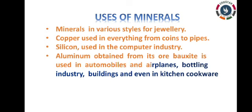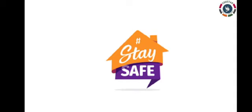Copper is used in making coins and pipes. Silicon is used in the computer industry to make chips. Aluminium, extracted from the ore of bauxite, is used in the automobile industry, airplane manufacturing, bottling industry, construction of buildings, and kitchen cookware. This brings us to the end of this part of the Geography Chapter 3. We will continue in the next video session. Thank you all.